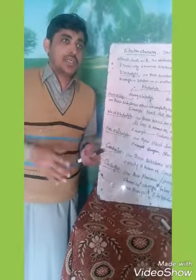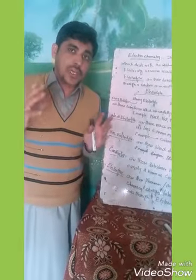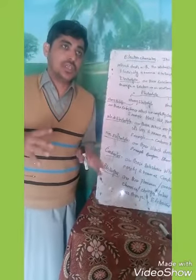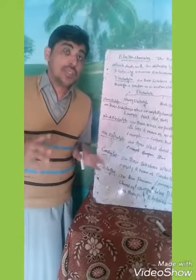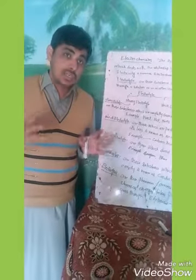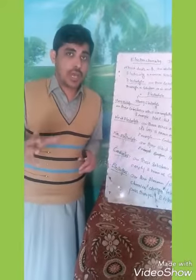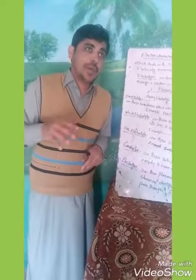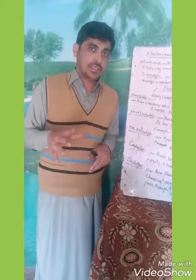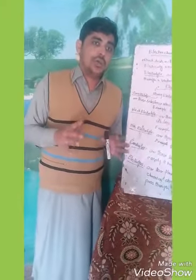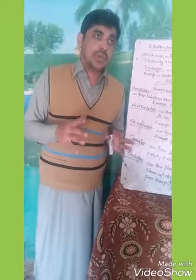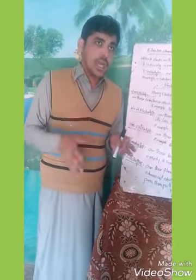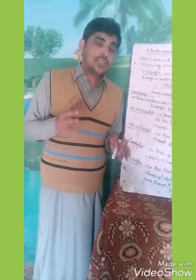What is meant by a conductor? Conductors are those substances which can pass electricity easily. They pass current easily because they have a large number of free electrons which can pass current without any resistance. Examples of conductors are copper, silver, and aluminum.